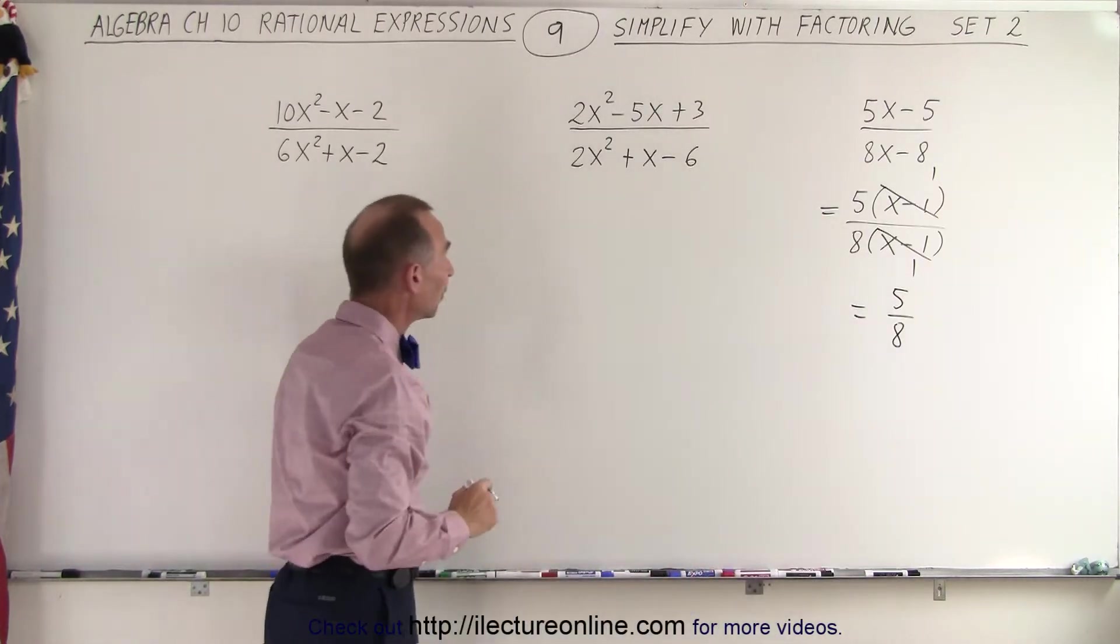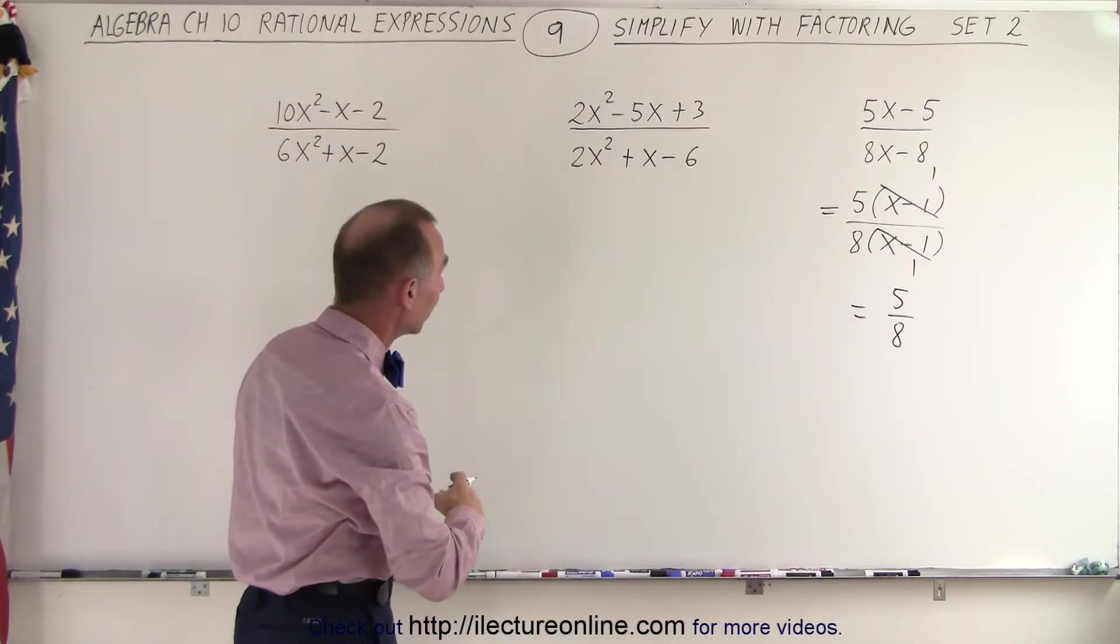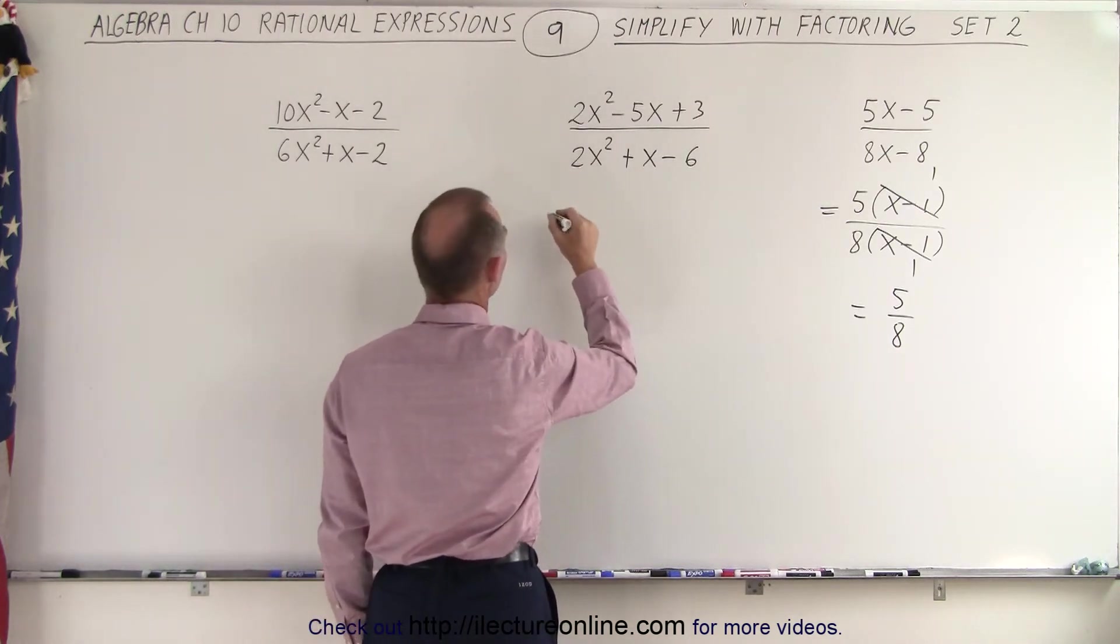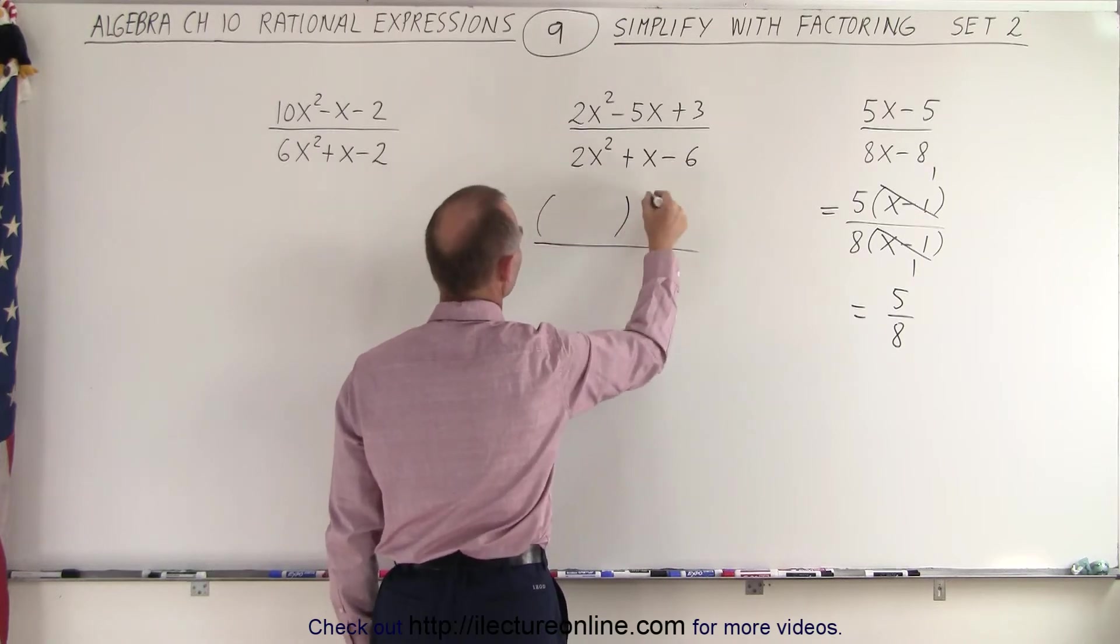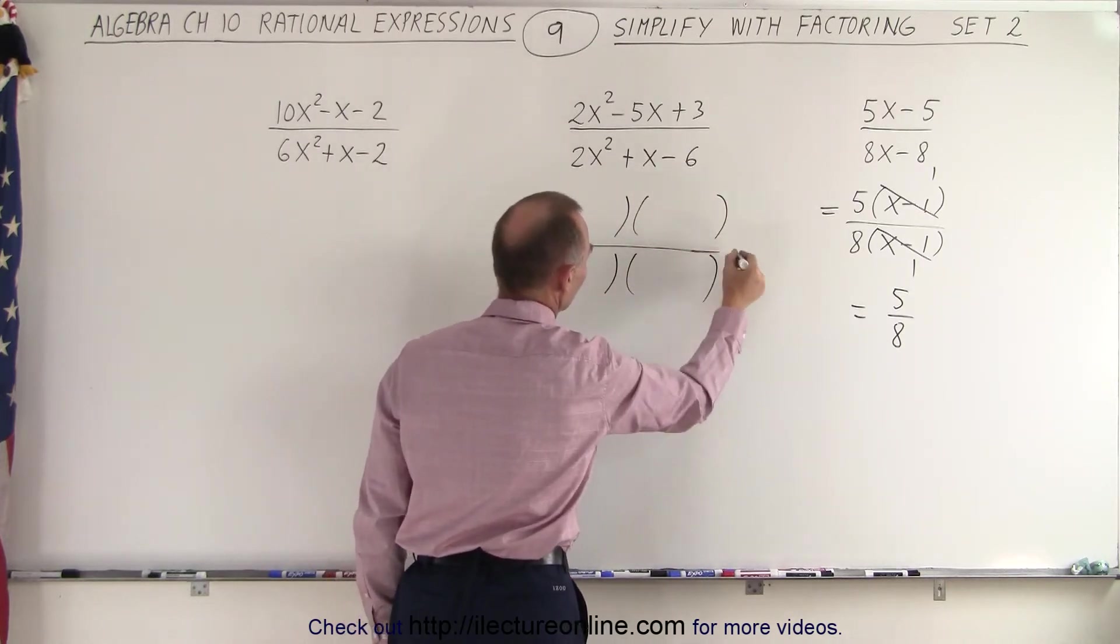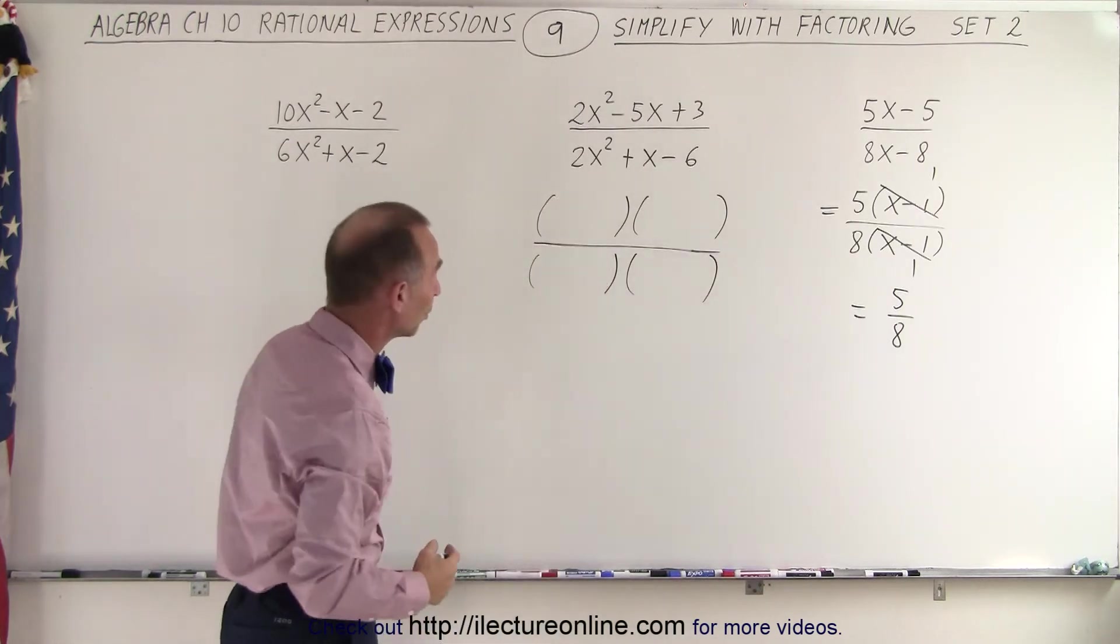On our next example, we're going to have to again factor the numerator and the denominator. That's a little bit more complicated than our first example there. So at least we know that our numerator is going to look like this, and our denominator is going to look like this. In other words, it's going to be a product of two binomials.